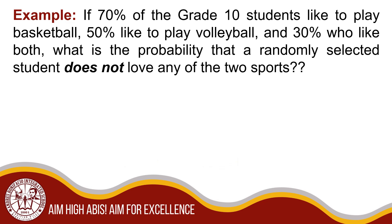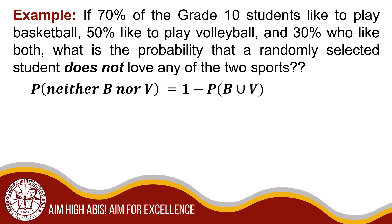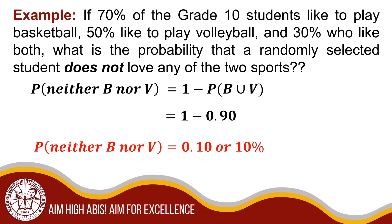If 70% of the grade 10 students like to play basketball, 50% like to play volleyball, and 30% like both, what is the probability that a randomly selected student does not love any of the two sports? Nakuha natin kanina na 90% ang mga napiling mag-aaral na gusto maglaro ng kahit anong laro — basketball o volleyball. Ngayon hahanapin natin ang porsyento ng mga ayaw maglaro ng kahit isa. So that is equal to 1 minus P(B union V): 1 minus 90%. Therefore, the probability of neither B nor V is equal to 10%.